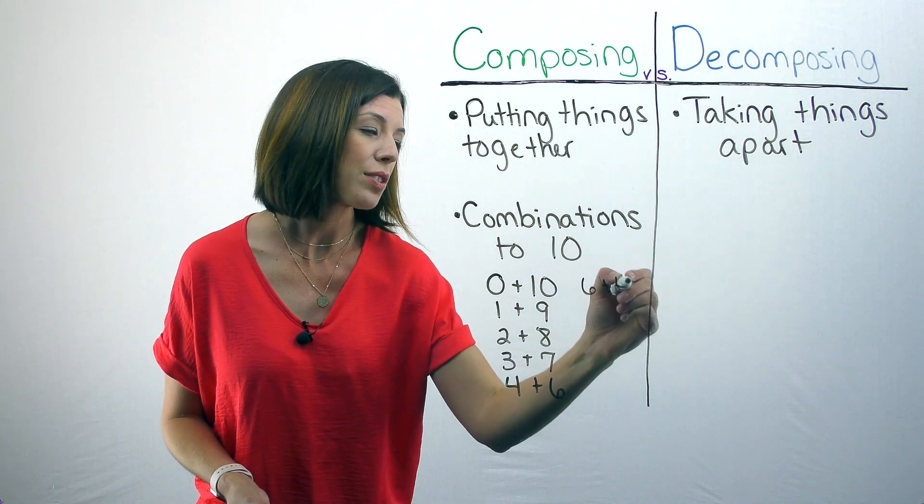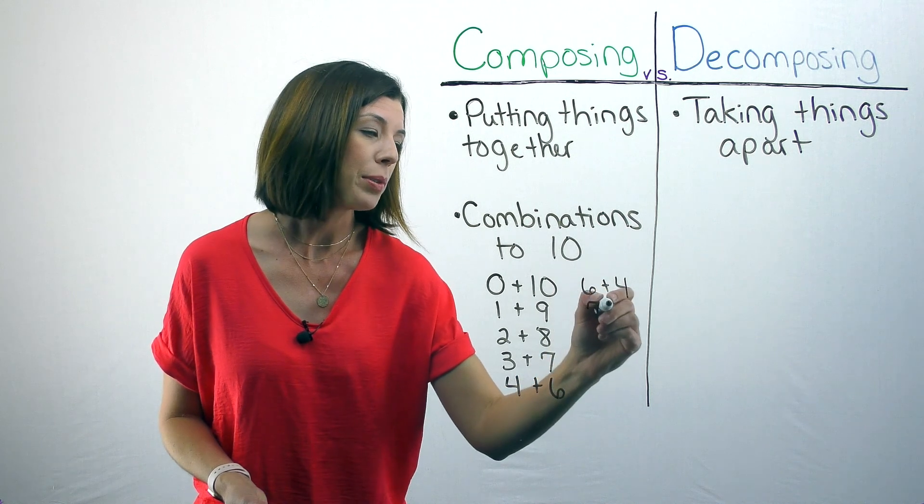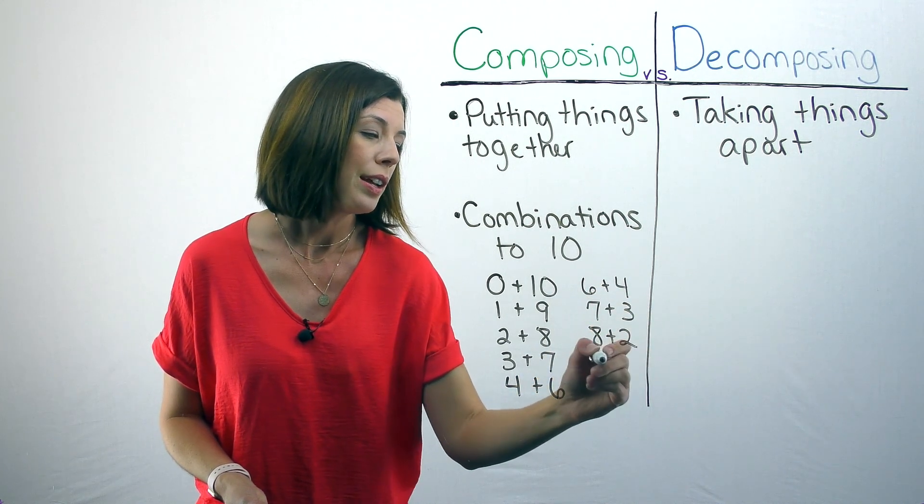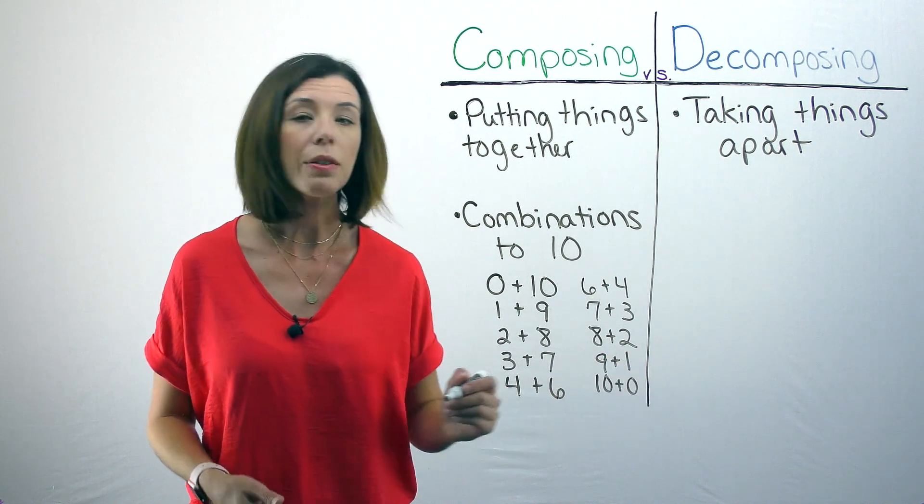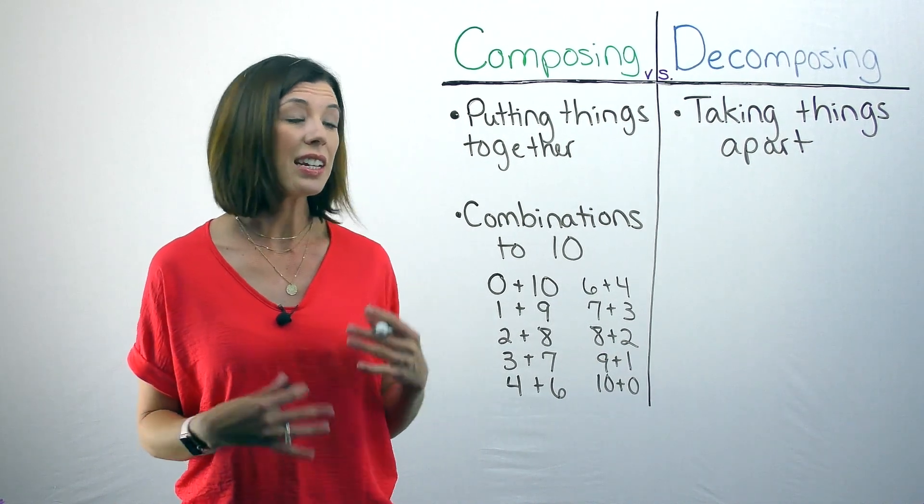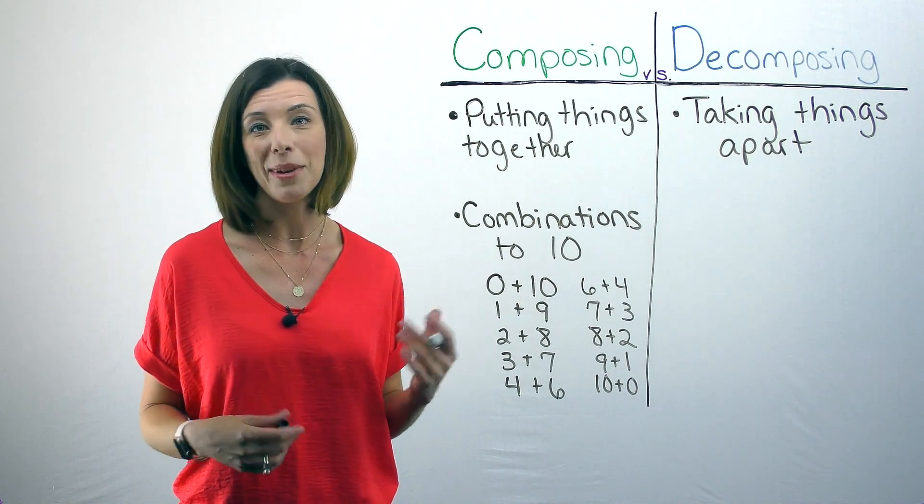So we could have six plus four, we could have seven plus three, we could have eight plus two, nine plus one, and ten plus zero. Depending on the contextual situation these could be different combinations.